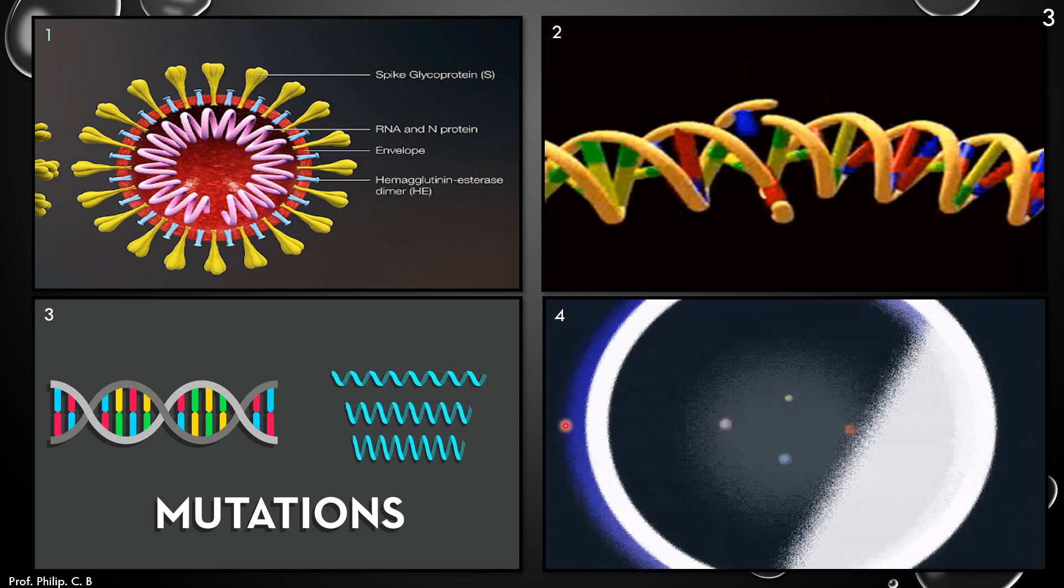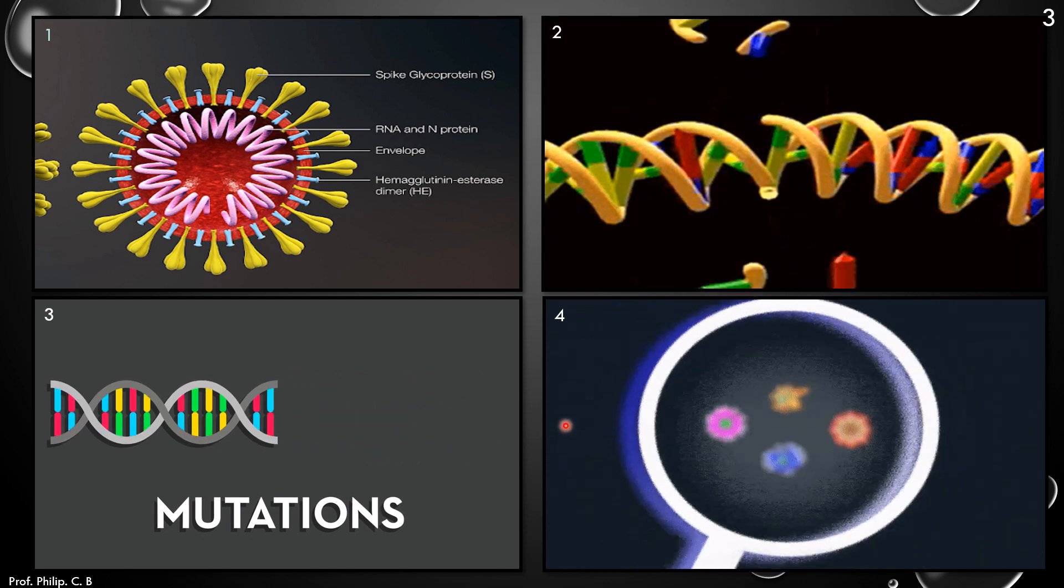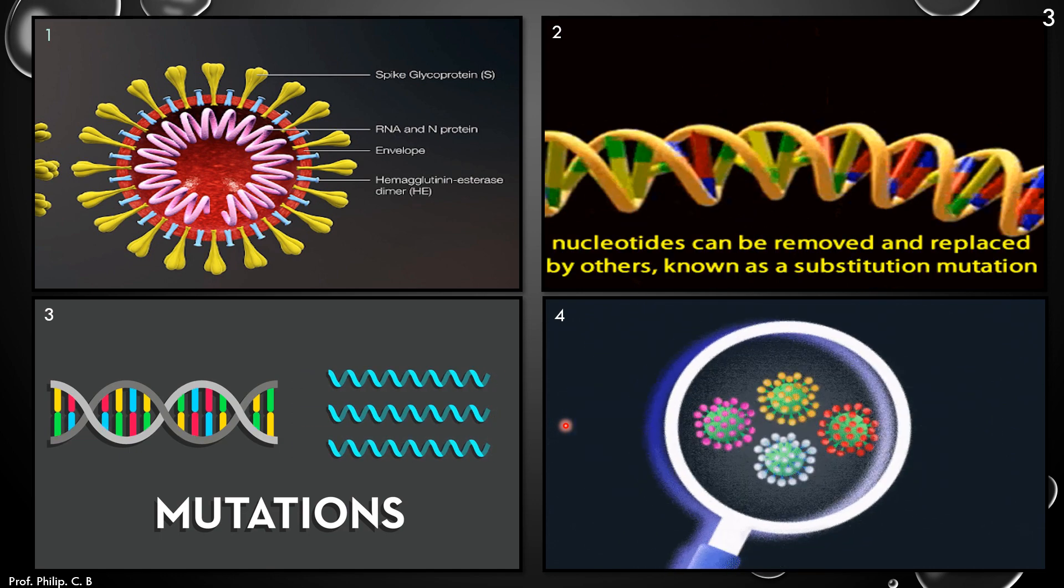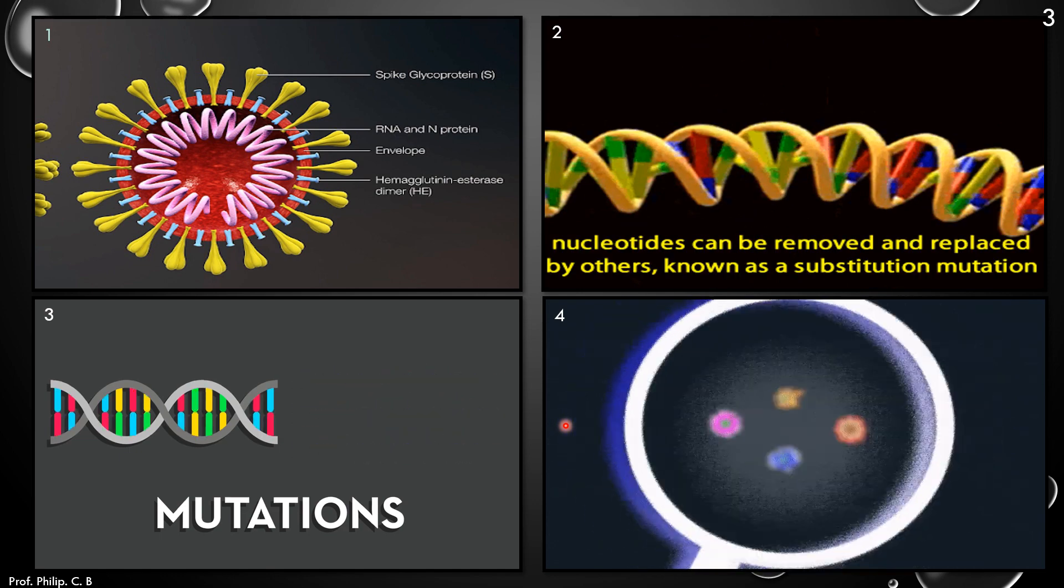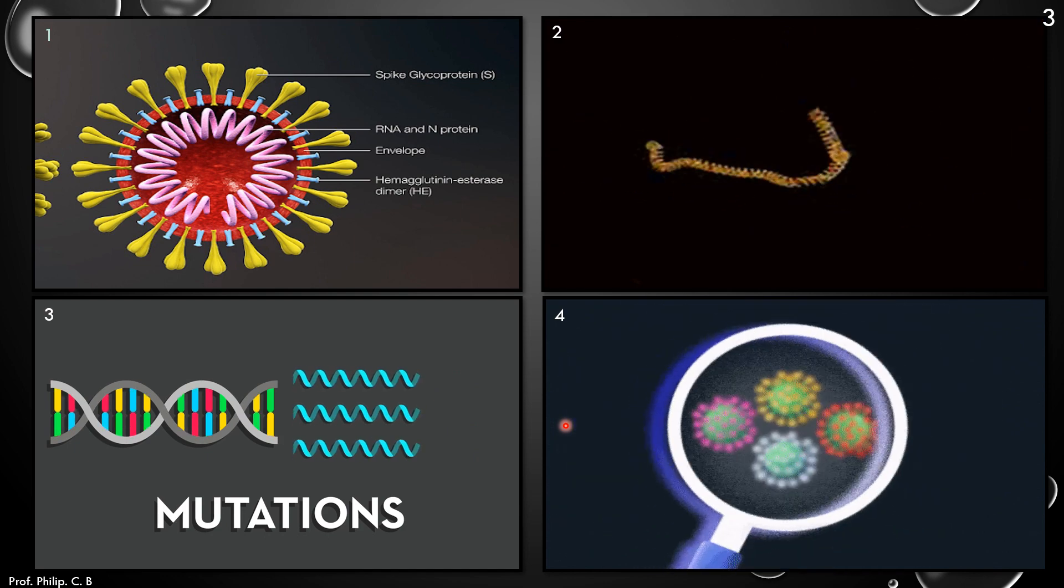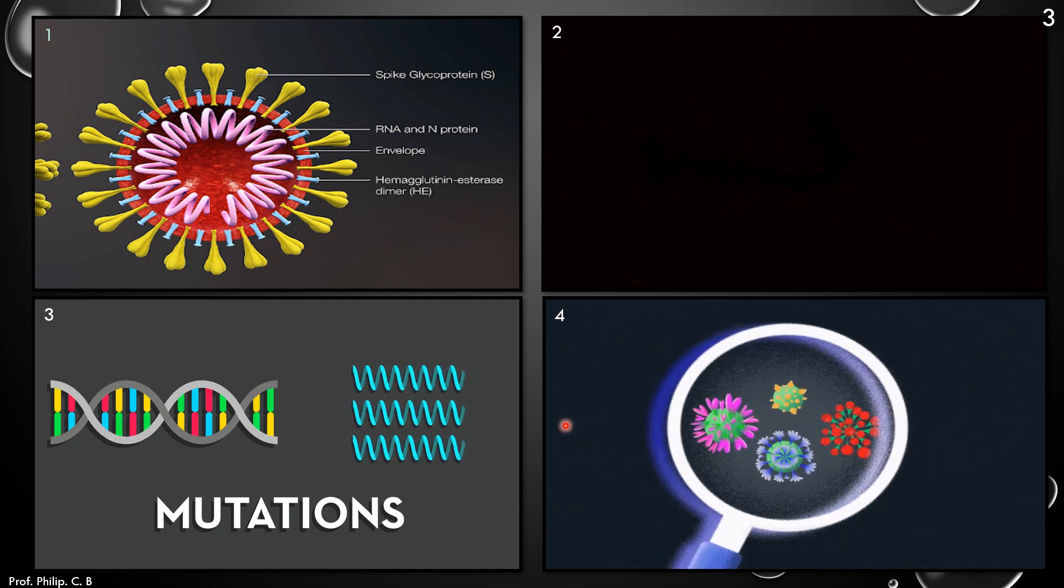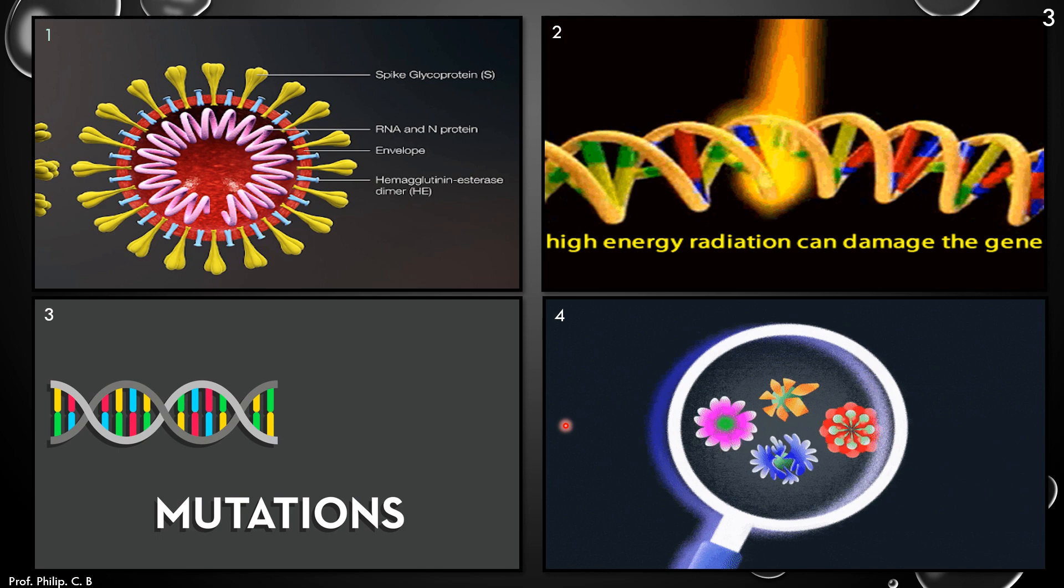And in the fourth animation we can see through the lens the four different types of viruses. Each time when the lens is zoomed in it shows the different viruses which are mutated or the new mutated form of the virus.